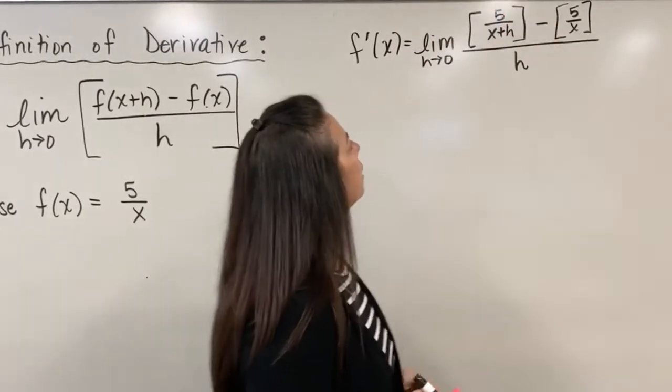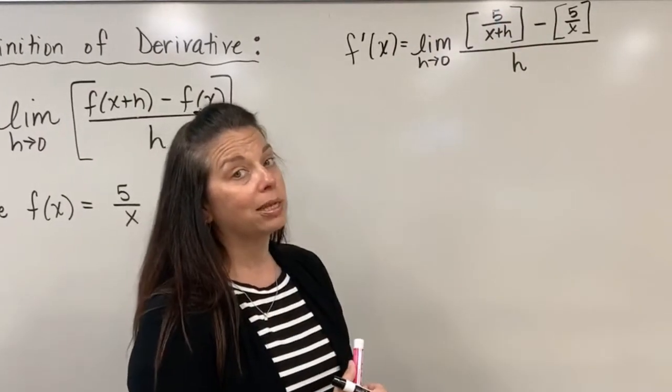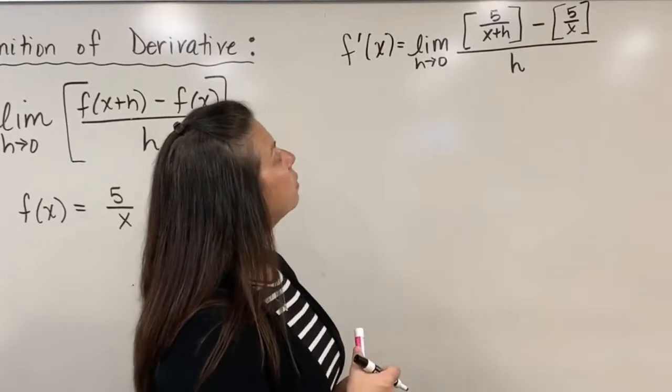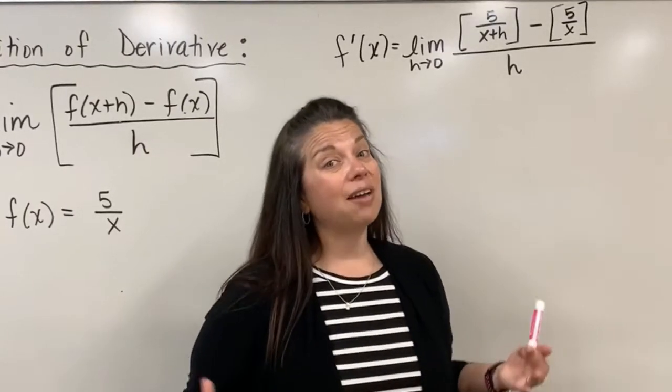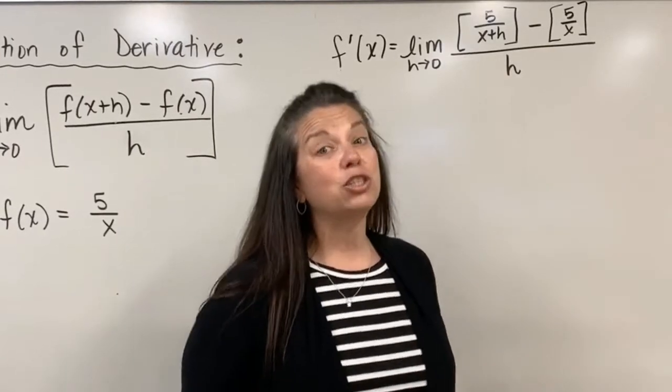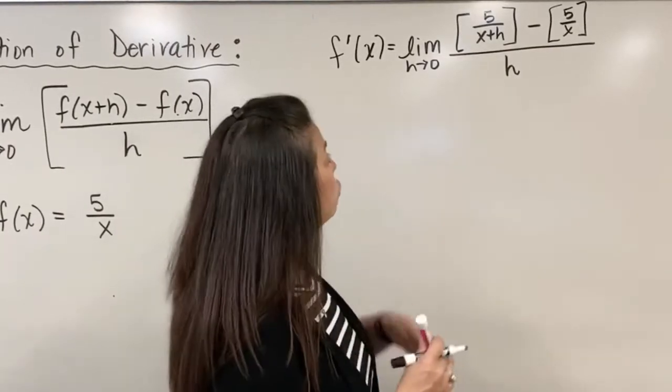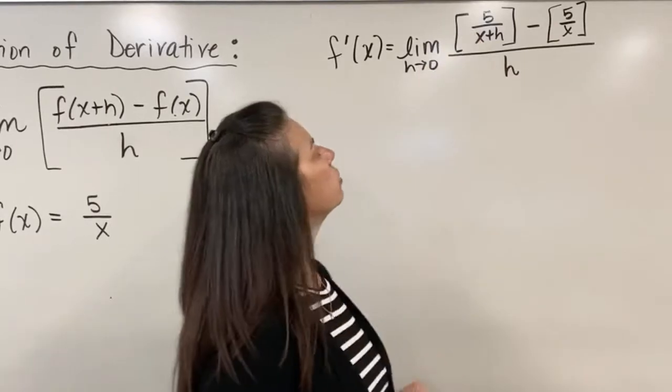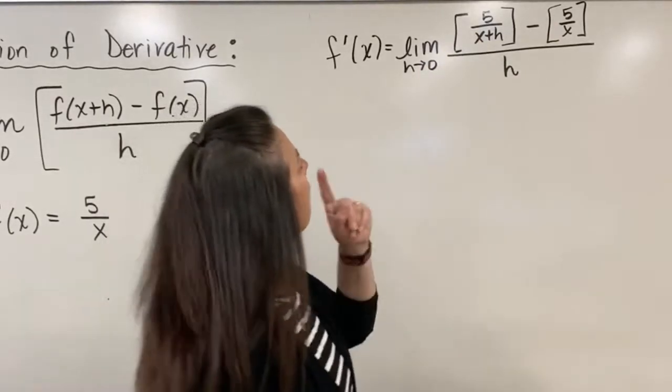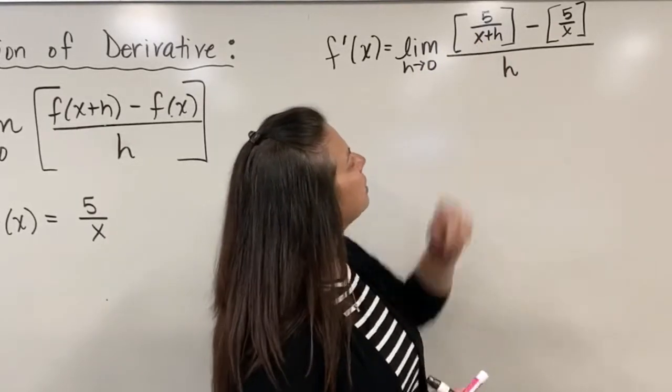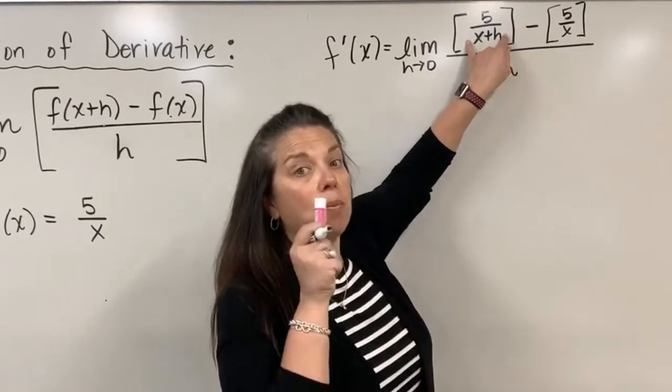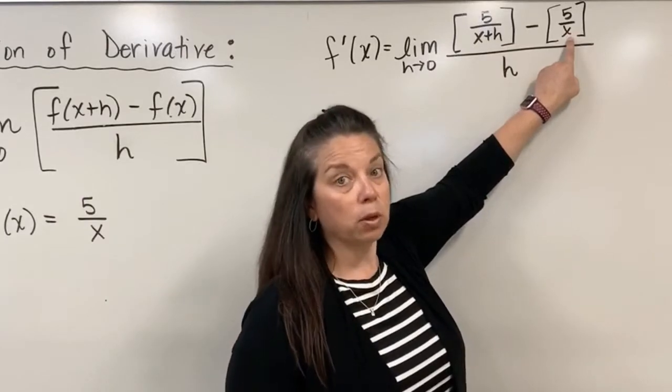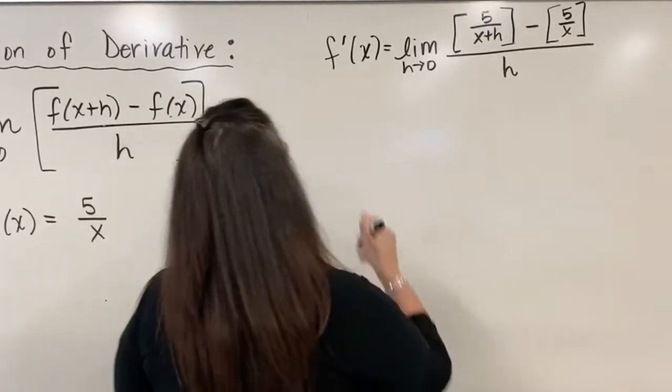So I reflect back in my numerator and notice I have two fractions that are being subtracted, and we know that we can subtract fractions if I have the same denominator, which I don't right now. So I can do some work though to make those have the same denominator, and I'm going to choose that my denominator actually be x plus h multiplied by the x.